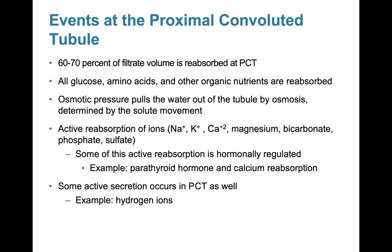To summarize the PCT: 60 to 70 percent of filtrate volume is reabsorbed there, while glucose, amino acids, and other organic nutrients are reabsorbed. Osmotic pressure pulls water out of the tubule by osmosis, determined by solid movement. Active reabsorption of ions also occurs, including sodium, potassium, calcium, magnesium, bicarbonate, phosphate, and sulfates.